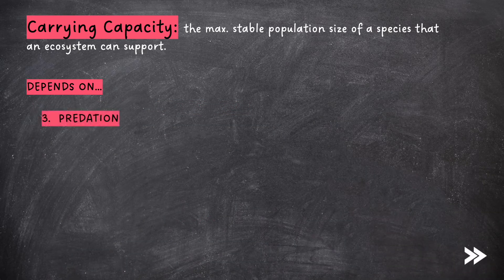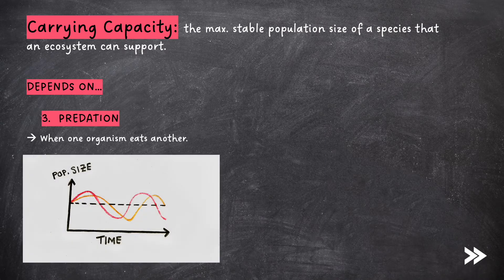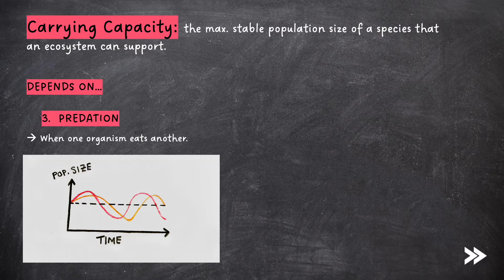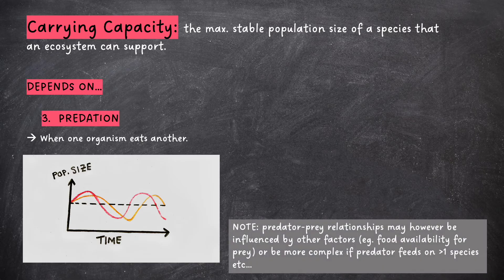Finally, predation also affects the carrying capacity. Predation is when one organism eats another. On the graph, as the population size of the prey increases, there is more food for the predators, so the predator population also increases. However, as the predator population increases, more prey are eaten and the prey population decreases. As prey decreases, there is less food for predators, so the predator population decreases too. As predator numbers decrease, more prey survive, so the prey population increases again and the cycle restarts. Note that predator-prey relationships may be influenced by other factors, such as food availability for the prey, or may be more complex if the predator feeds on more than one species.